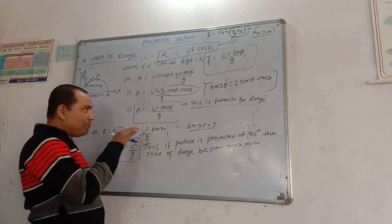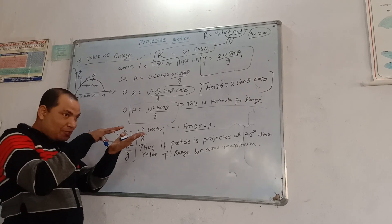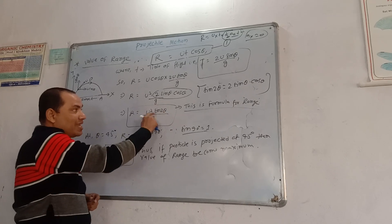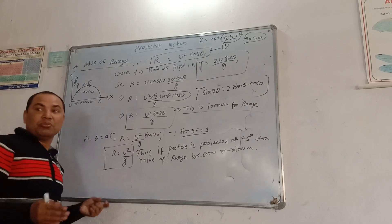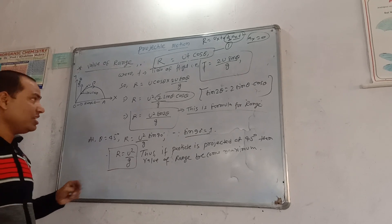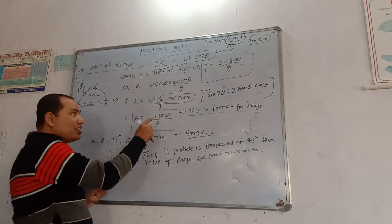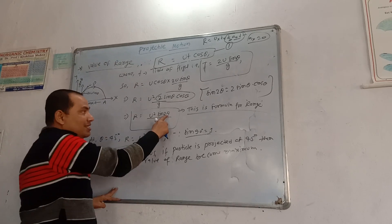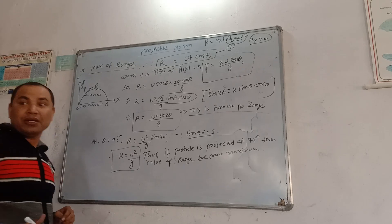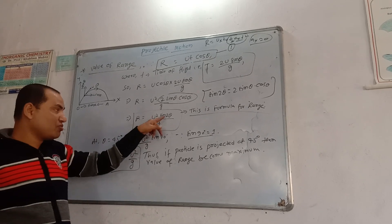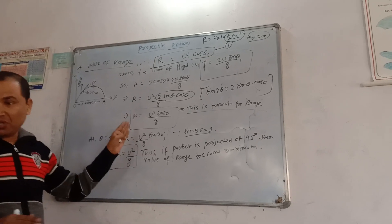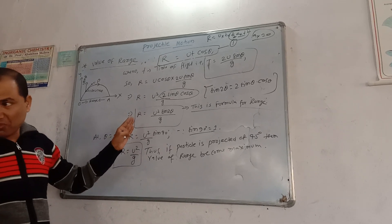Now consider special cases. If the particle is moving along the horizontal, theta is 0 degrees, then sin 2θ = sin 0 = 0, so range is 0 — range is minimum. At 0 degrees the range is minimum. At 90 degrees the range is also minimum.